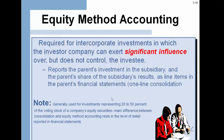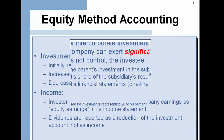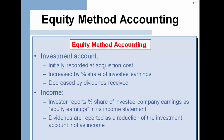The equity method applies to holdings of 20% to 50% where you can exert significant influence over the investee. The investee reports information on the parent's balance sheet. You put it in an investment account, initially recorded at acquisition cost. You increase the value of that account by the investee's earnings and decrease it by dividends. The income is part of equity and you show dividends as a reduction in investment.